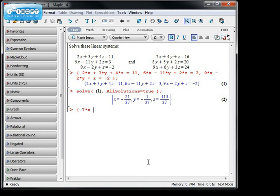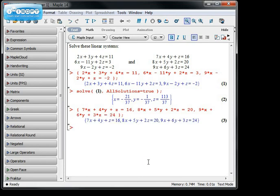We have 7 times x, plus 4 times y, plus z equals 16. The second equation is 8 times x, plus 5 times y, plus 2 times z equals 20. And the final equation is 9 times x, plus 6 times y, plus 3 times z, is equal to 24. So I'll close the brace off. That groups all of my equations together.